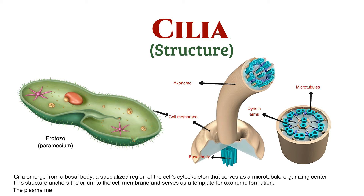The plasma membrane surrounds the axoneme, enclosing the cilia's structure within a lipid bilayer.